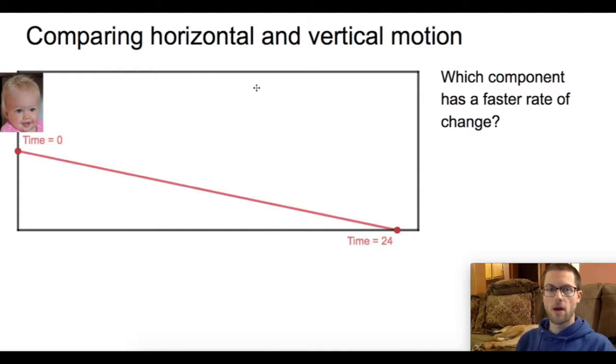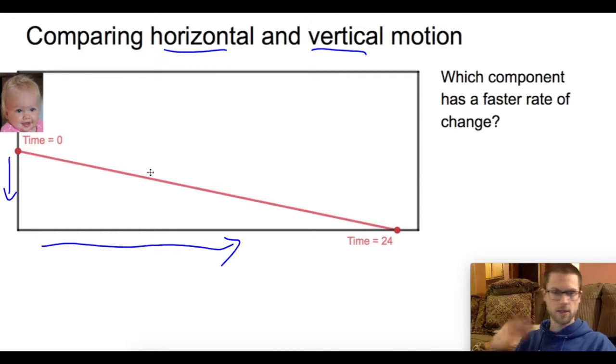I want you to think about looking at this picture, which component looks like it has a faster rate of change. That is, which of these components, the horizontal or the vertical, looks like it's moving faster. Am I moving faster vertically or am I moving faster horizontally? So pause this if you need to think about it and let's see if you're right moving forward.